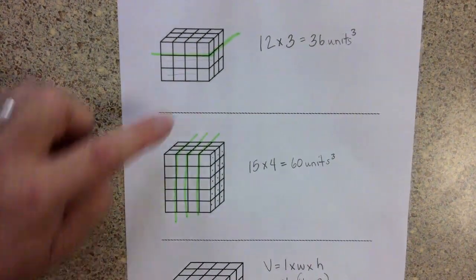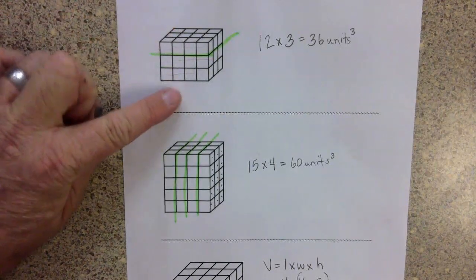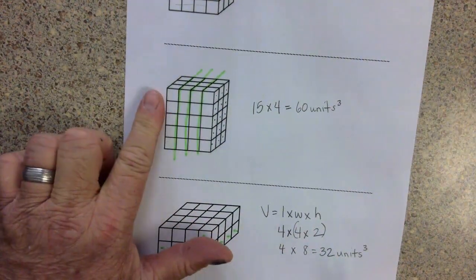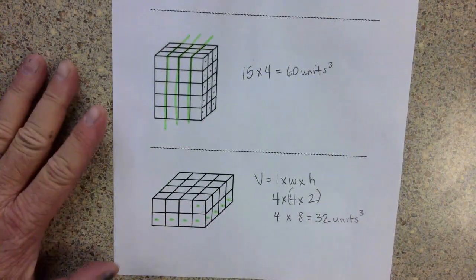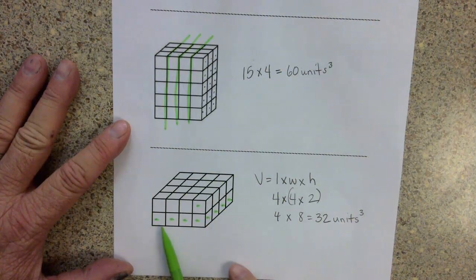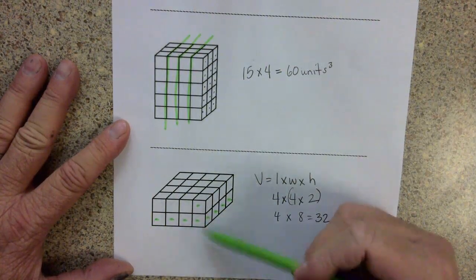So three different ways: looking at the top layer and then counting the layers, looking at a slice and then counting the slices. The easiest way, the way that we're trying to get everyone to, is length times width times height.